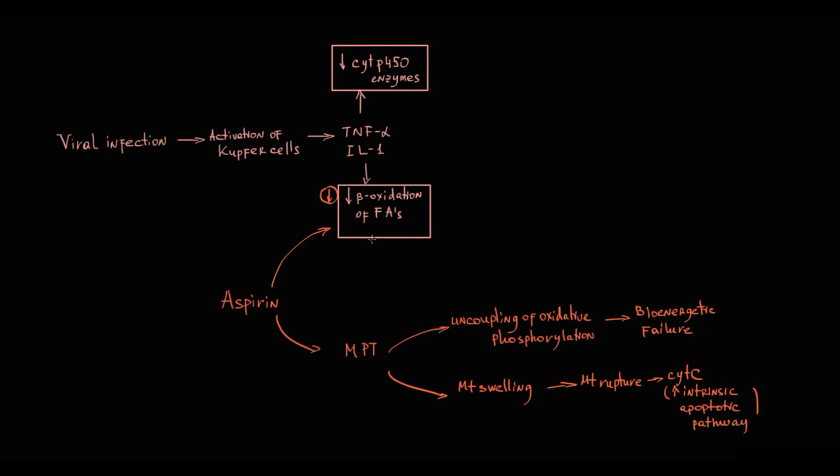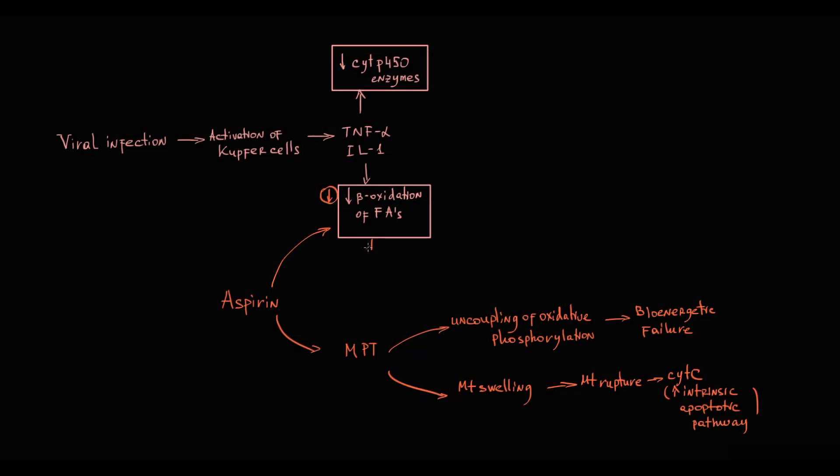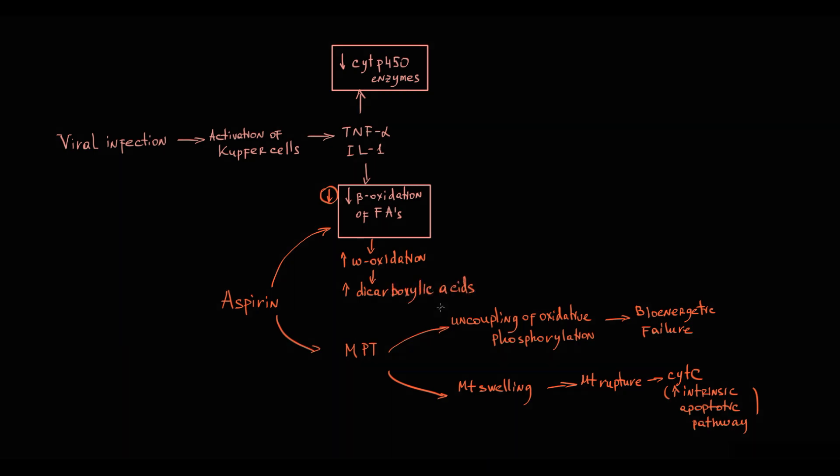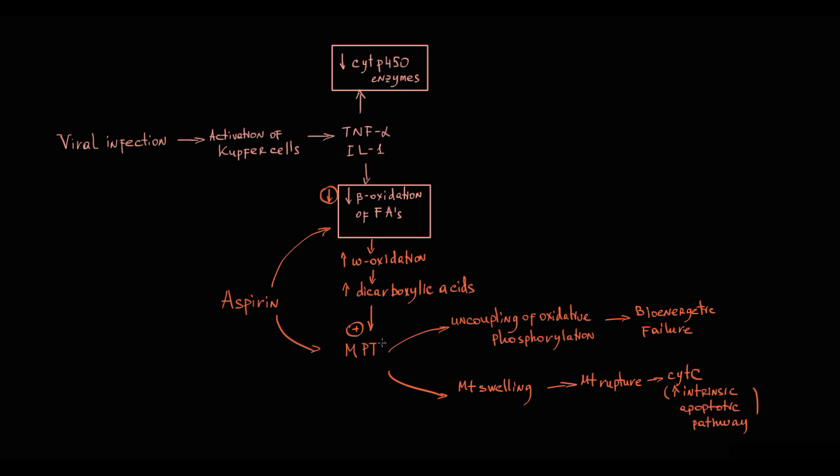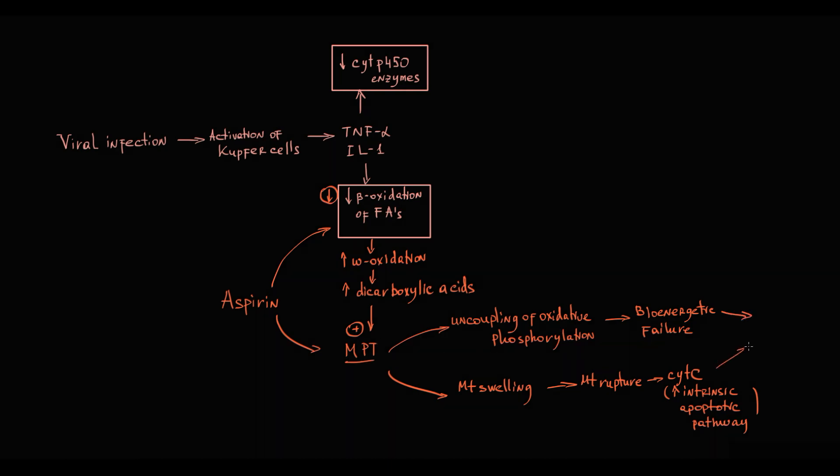Aspirin inhibits normal beta oxidation in mitochondria, resulting in increased omega oxidation with accumulation of dicarboxylic acids. The problem is that dicarboxylic acids in such massive quantity are toxic for mitochondria, as they also induce mitochondrial permeability transition, leading to cellular death.